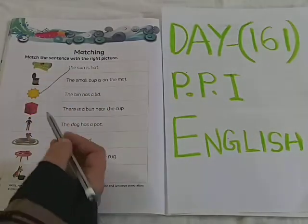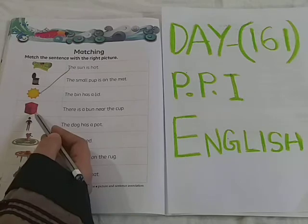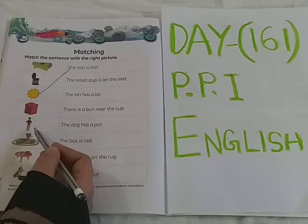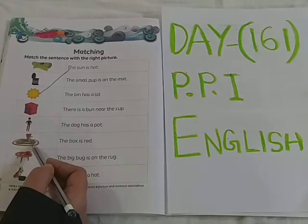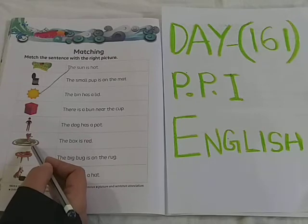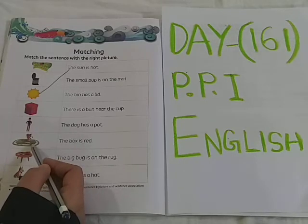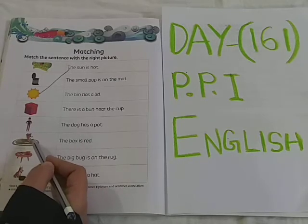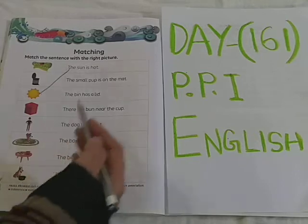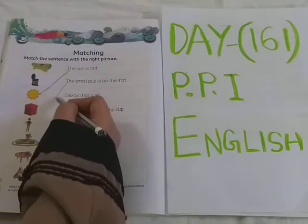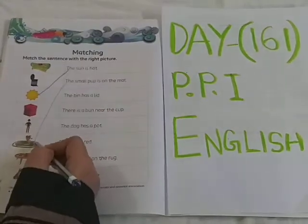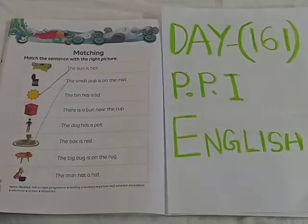See here in the picture. Is there a small pup? No. Is there a small pup? No. You can see the mat, and even the pup is also there. The small pup is on the mat. So this is the correct picture. Match the sentence with the picture.